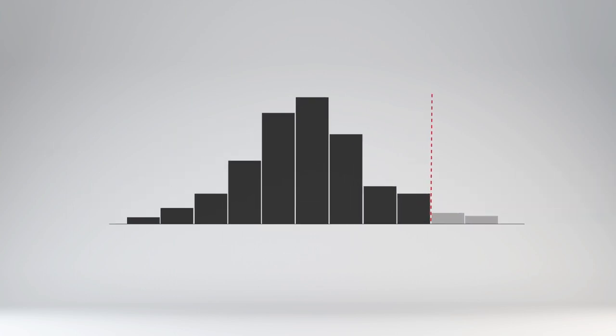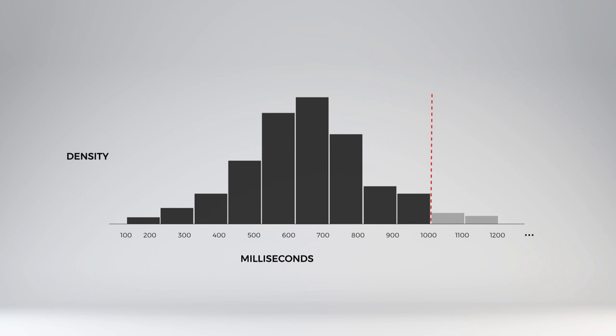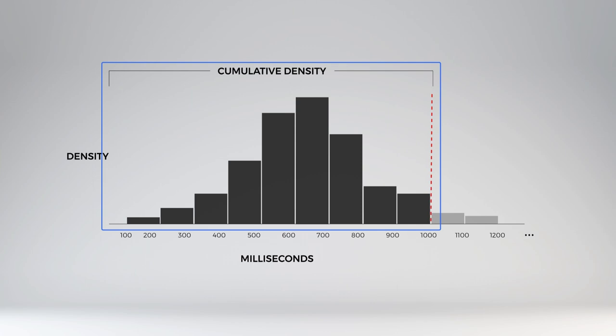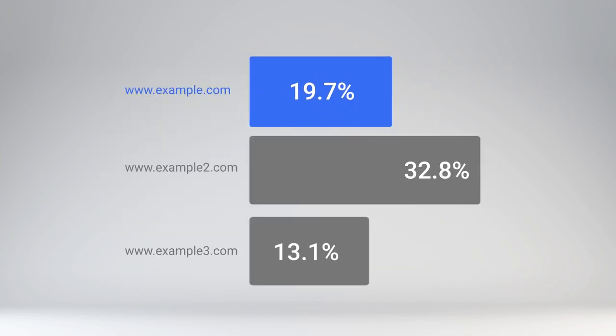So for example, we can find out the percentage of page loads that paint in under a second by adding up the densities of all the bins whose start time is less than 1,000 milliseconds. We can run the same query against a different origin to compare which one has a higher density of fast experiences.